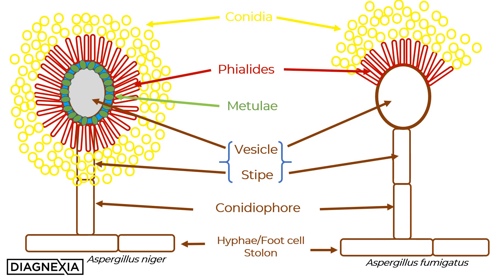The conidiophore is born by a hyphal form, or foot cell, or stolon. Similarly, Aspergillus fumigatus has a foot cell or stolon, conidiophores, a stipe, and a vesicle. But clearly you can see the absence of a metulae layer, and the phylides bear the conidia only on the superficial two-thirds of the surface of the vesicle.